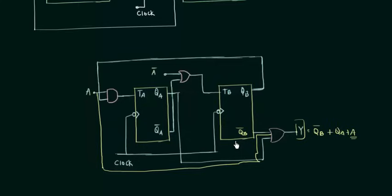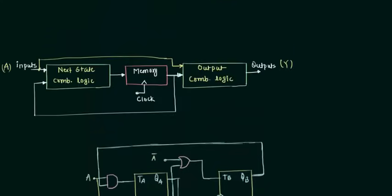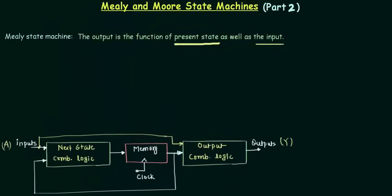Now this output is the function of the input and also the function of the value stored in the flip flop, so we can say that it is the Mealy state machine or Mealy circuit. Once you have the idea about the Mealy and Moore state machine, basically the difference between them, it's not a big deal to do these things.